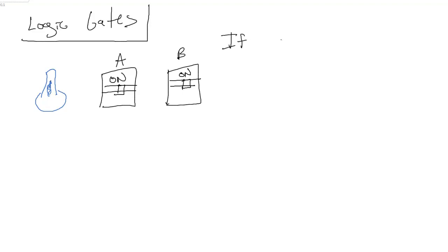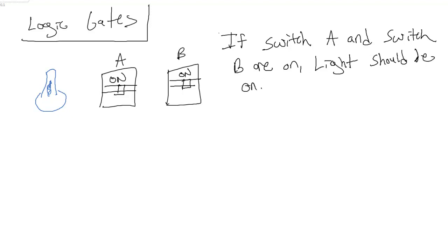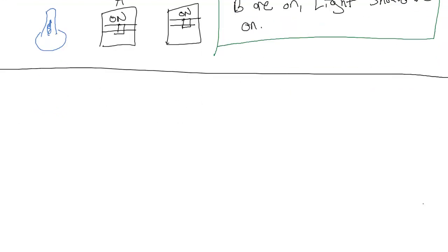And we have a light or a lamp. And let's say if switch A and switch B are on, we want the light should be on. So we have a statement that we want to check if it's true. So I'm going to introduce something called logic gates.